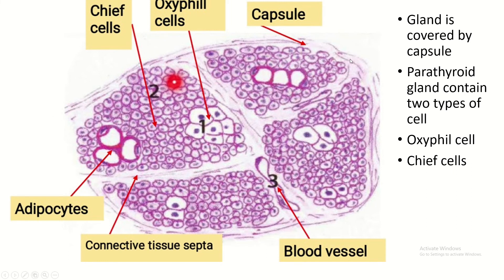The gland is covered by the connective tissue capsule. This is the connective tissue septa. The parenchyma of the gland contains two types of cells: the chief cell and the oxyphil cells, and occasional adipocytes and blood vessels present within the gland.